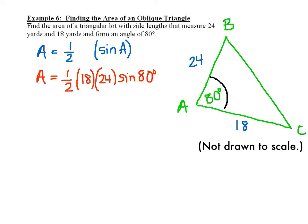C times B, or B times C. There we go. So you take your side B, side C, and multiply it by the sine of 80 degrees.